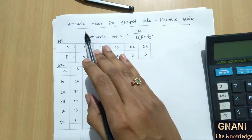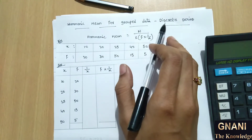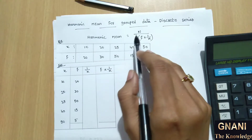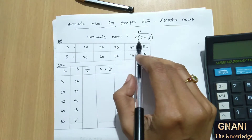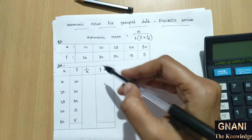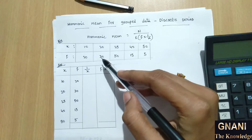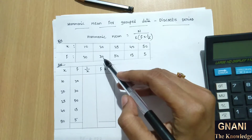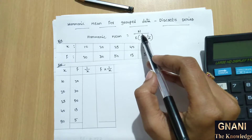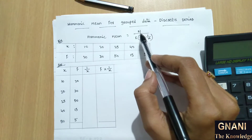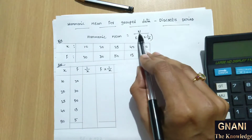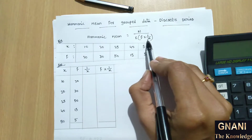Harmonic mean for grouped data discrete series — the formula is: harmonic mean equal to n by summation of f into 1 by x. This is for discrete data, which means frequency values are needed. Here n means total frequency.